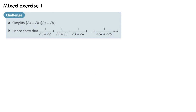The final question from Mixed Exercise 1: Part a — simplify (√a + √b)(√a - √b). We can notice that this is just a difference of two squares, so we get (√a)² - (√b)² which is just a - b. Part b — hence show that 1/(√1 + √2) + 1/(√2 + √3) + ... + 1/(√24 + √25) = 4.